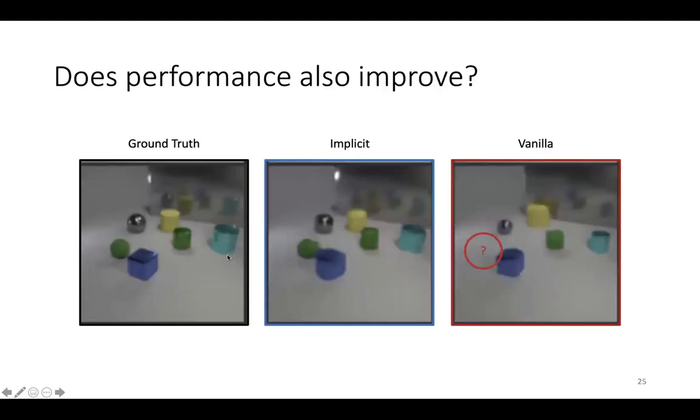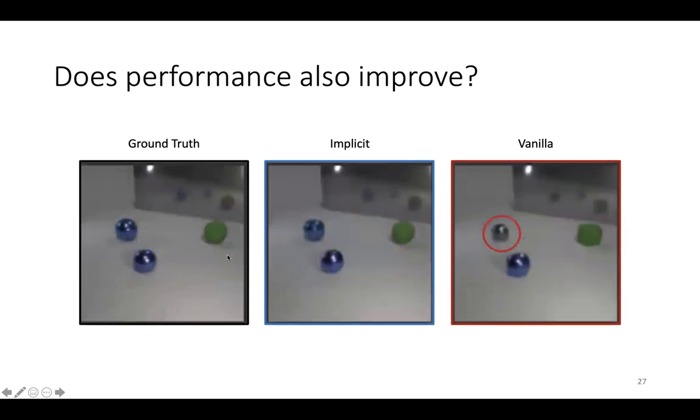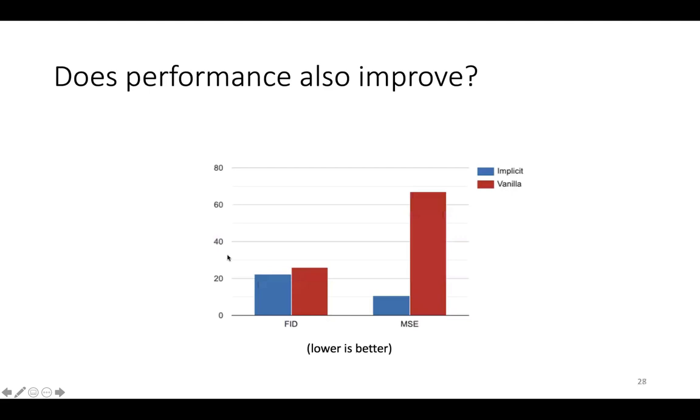When we looked at the reconstruction quality, we observed that the vanilla version sometimes misses objects, changes their size, or changes their color, whereas the implicit version generally matches the ground truth much more closely. In terms of mean squared error, the implicit version has almost a 7x improvement over its vanilla counterpart.